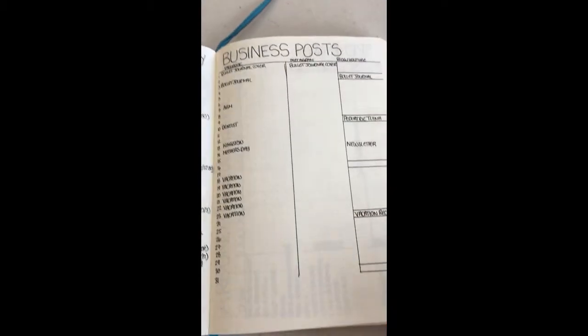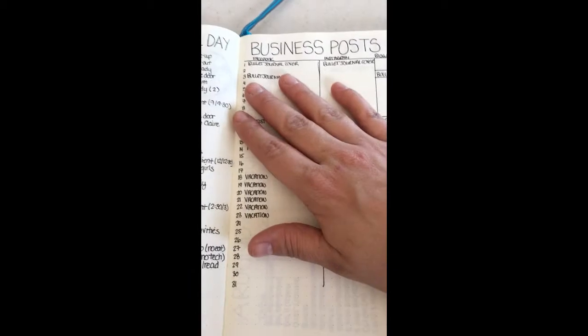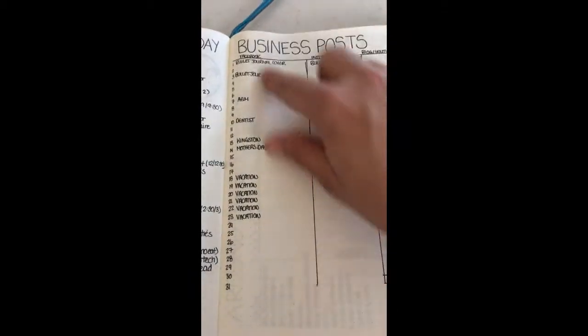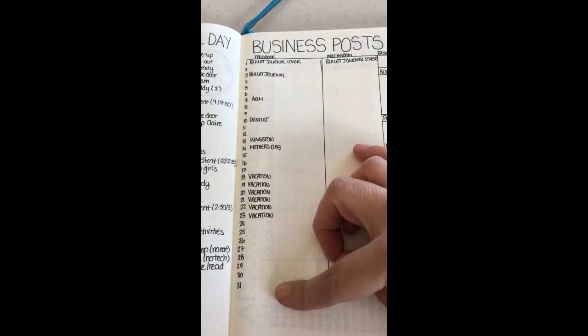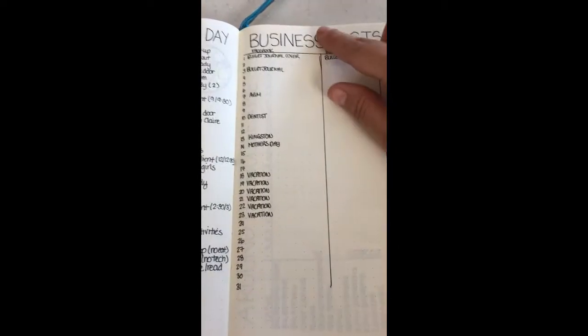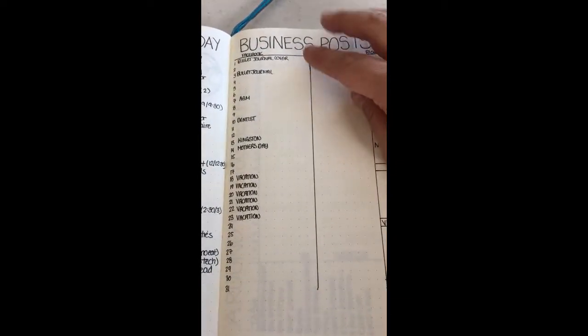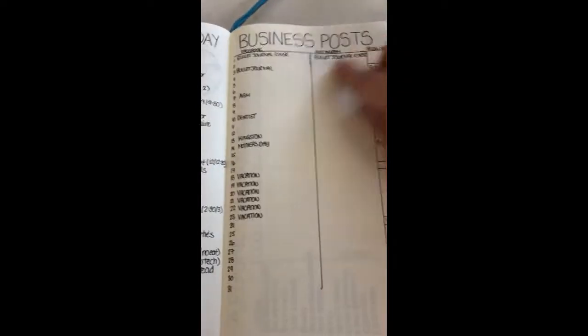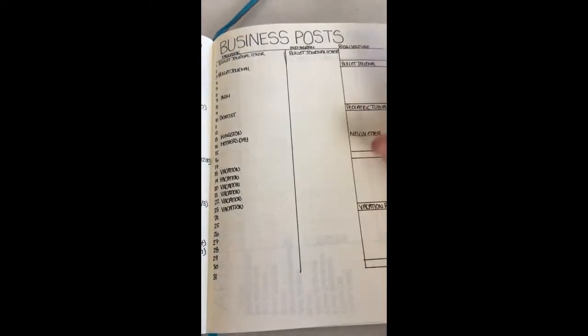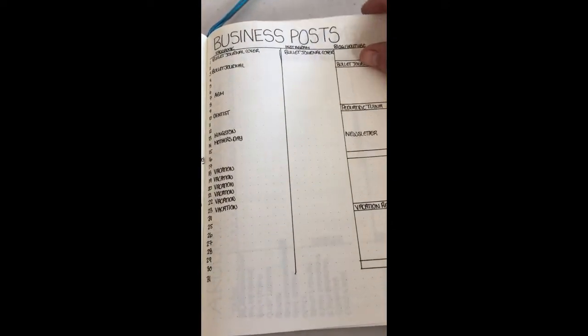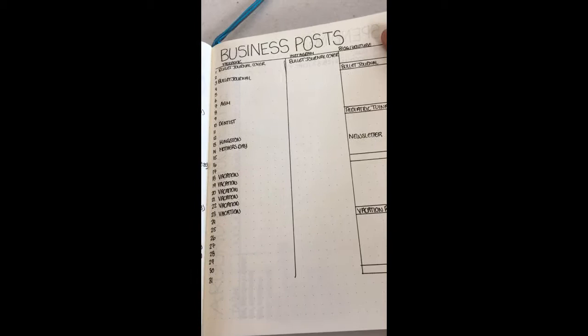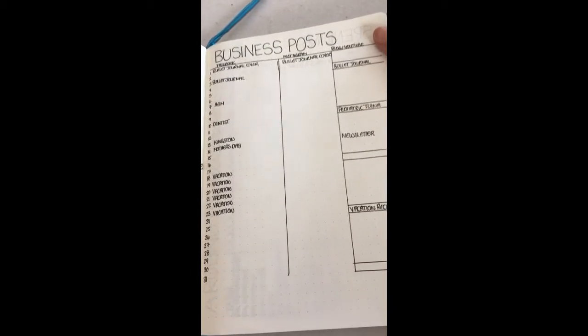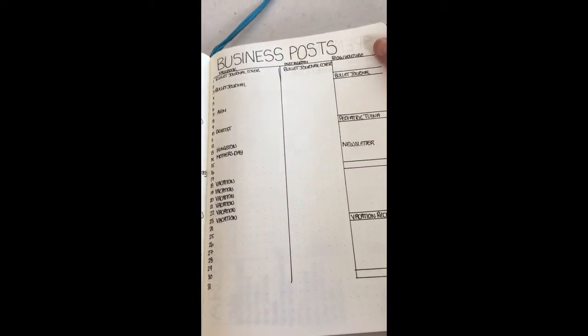Then on my other side I put down, I try and post on social media for my business once a day. So I write down sort of what I want to or what I have or what I'm going to post for that day. And that way I can make sure that I'm posting a lot of different content and I'm getting everything across that I would like to on my social media and website platforms.